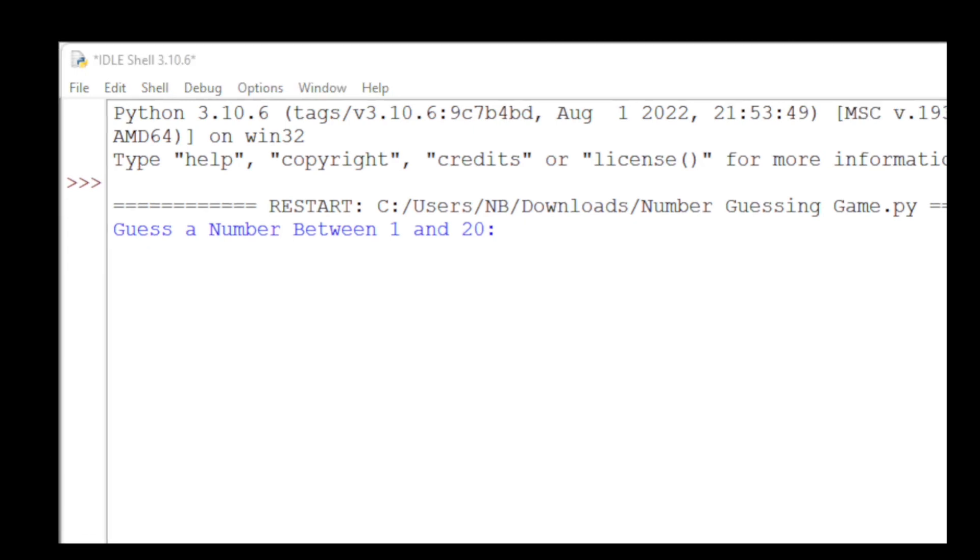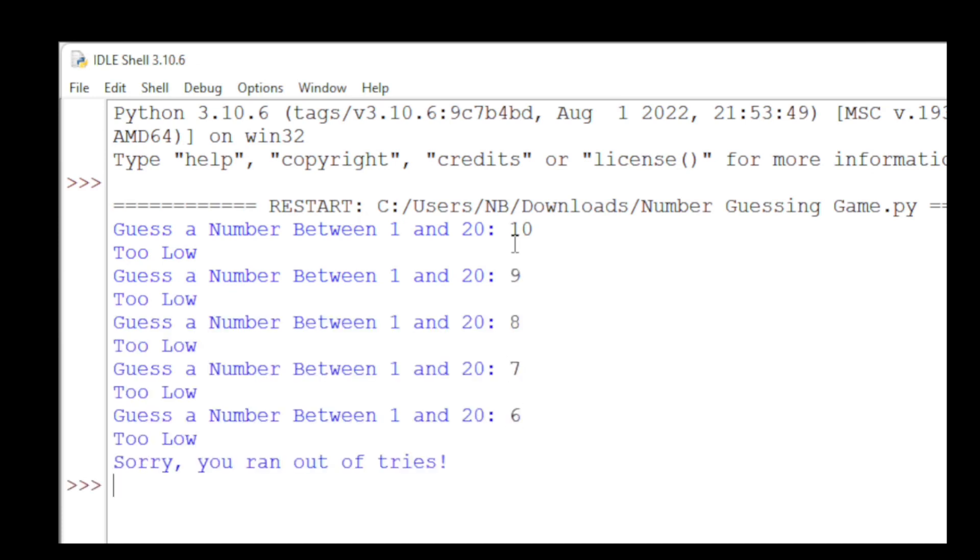Let's see what will happen when we run out of tries. So if we enter 10, it's too low. So we'll enter 9. Then 8, 7, 6. Since we had 5 tries, it says, sorry, you ran out of tries.